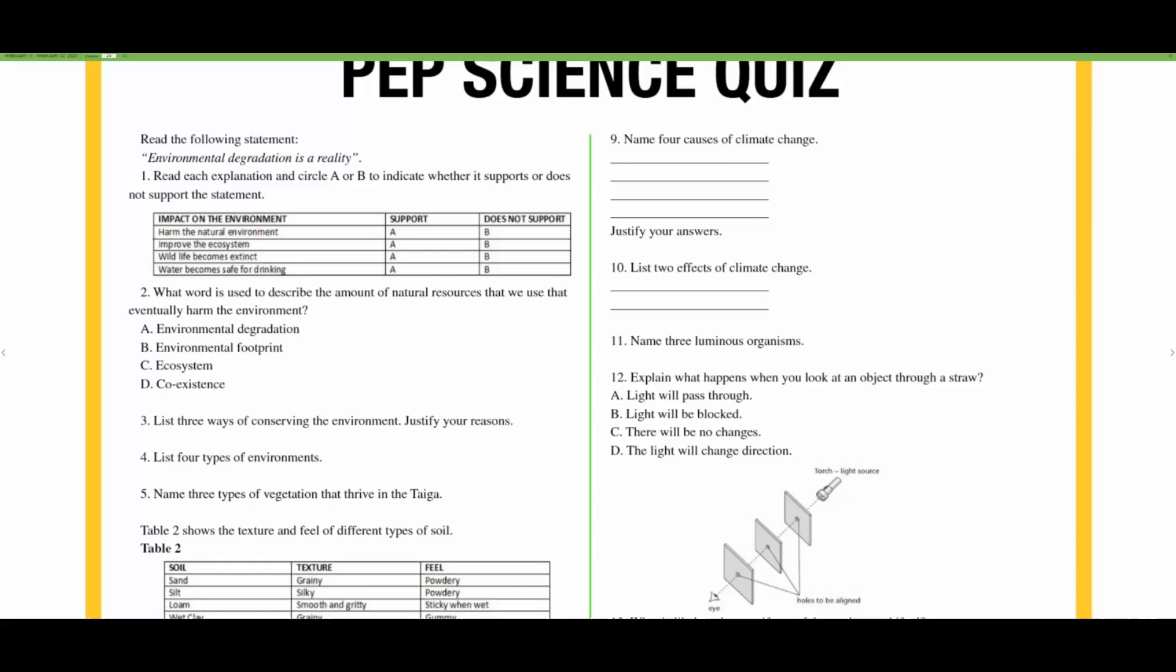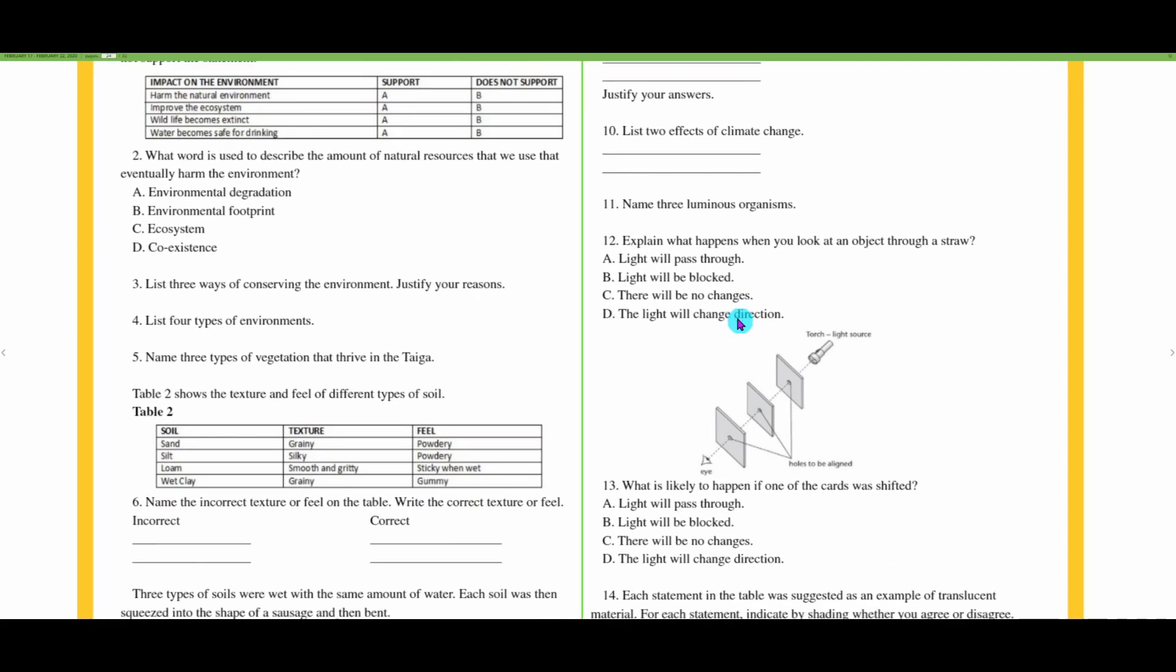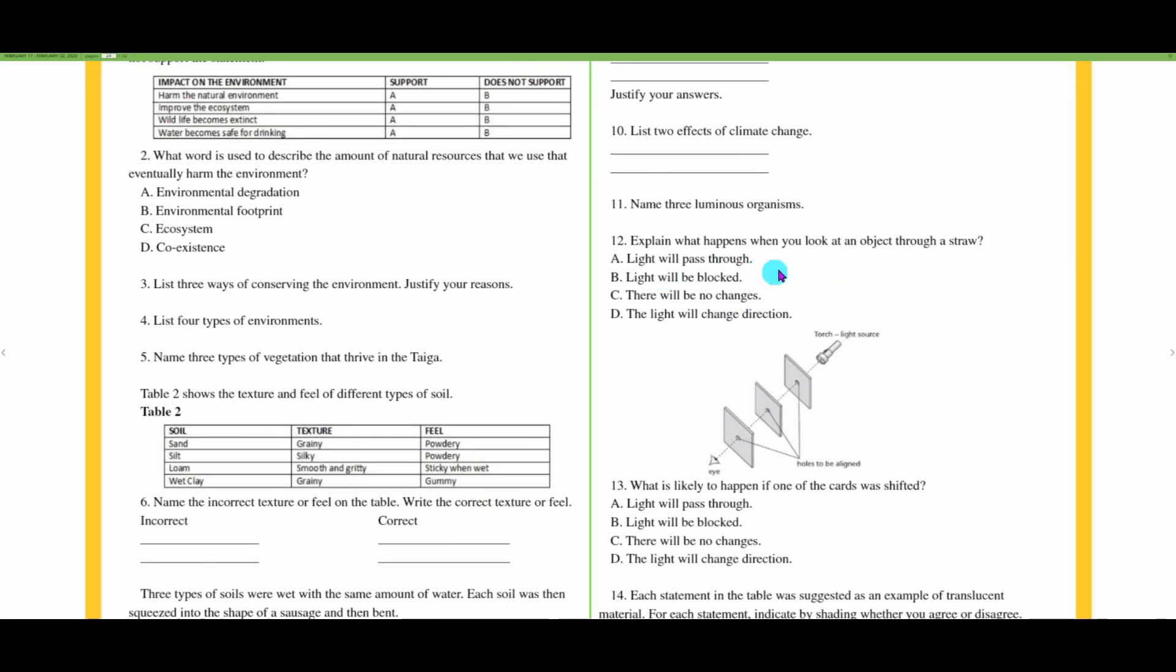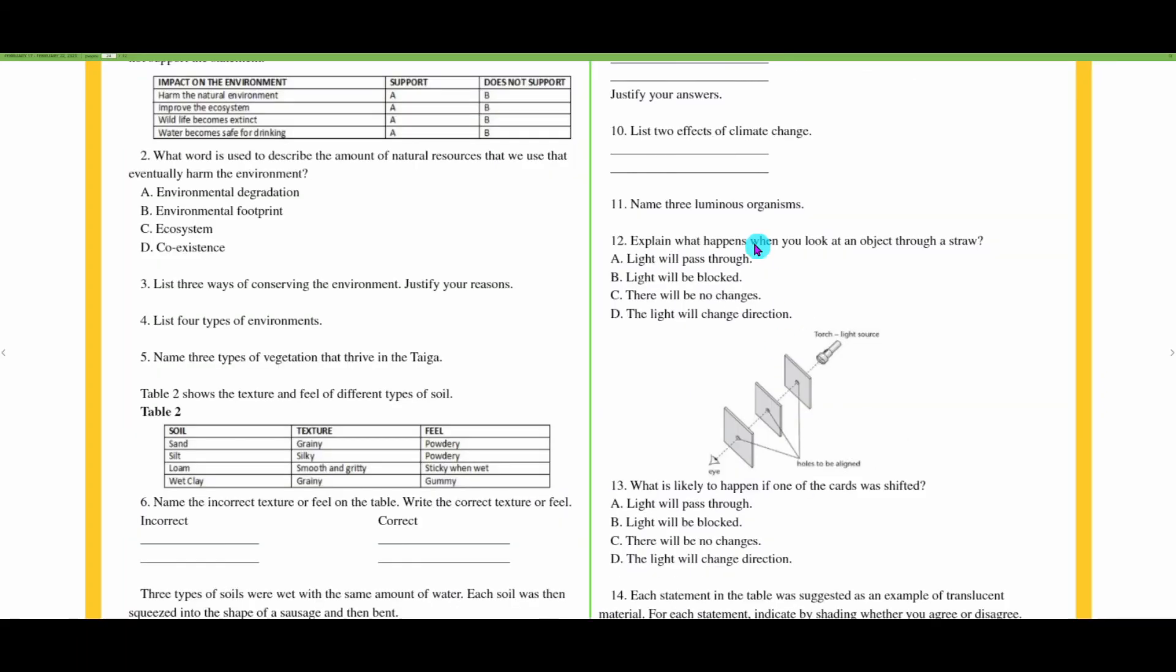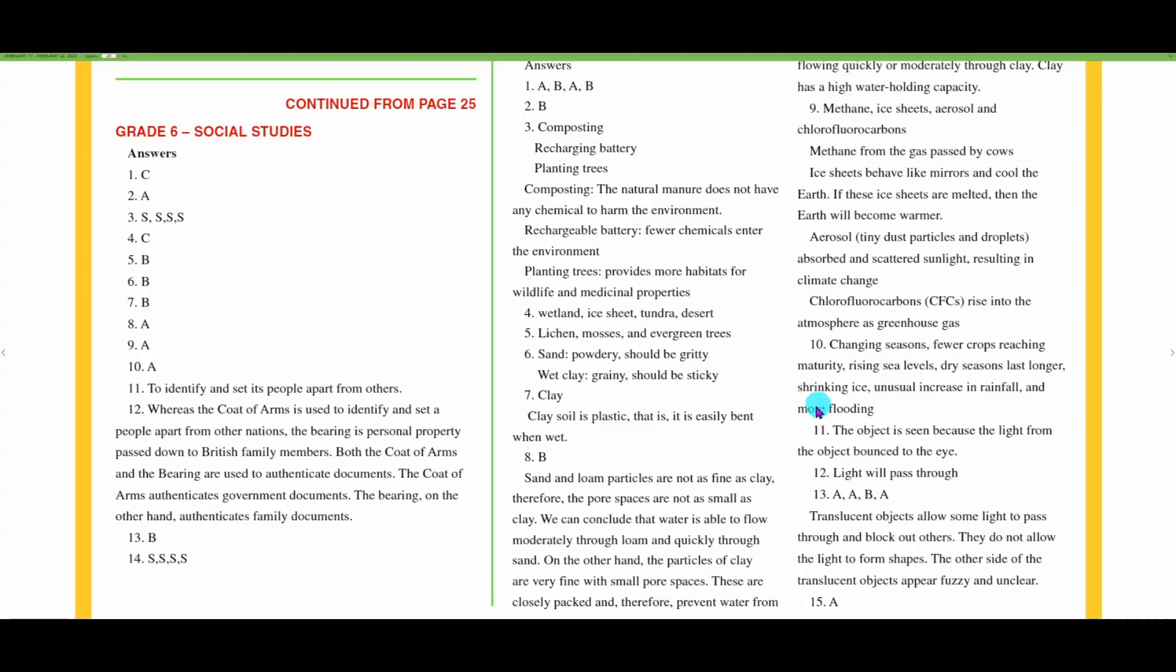Number twelve: explain what's happening when we look through the straw. Light will pass through, yes. Number thirteen: what will happen if one of the cards is shifted? We know that the light will be blocked, but they have A, A, B, A. So this must be for fourteen.